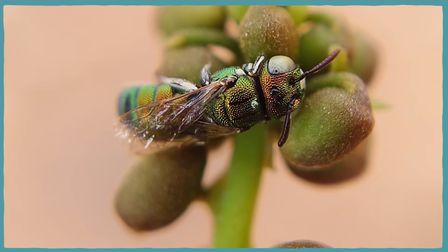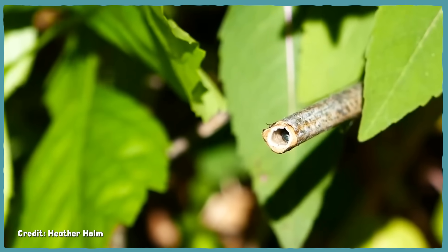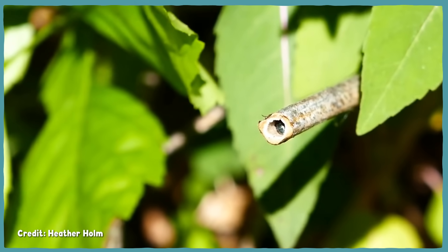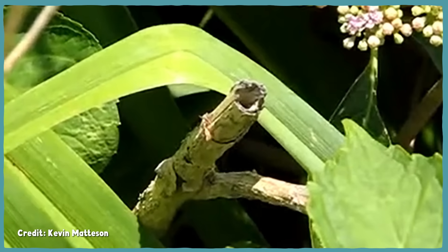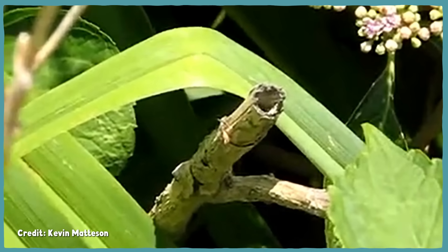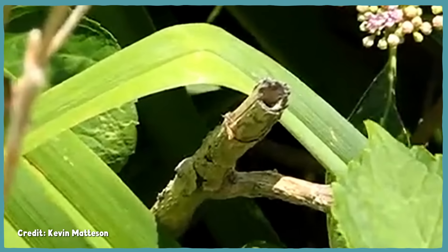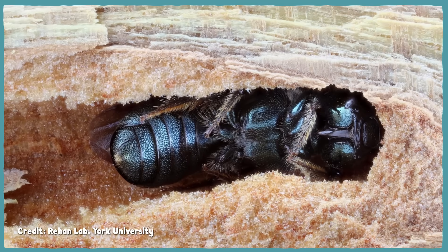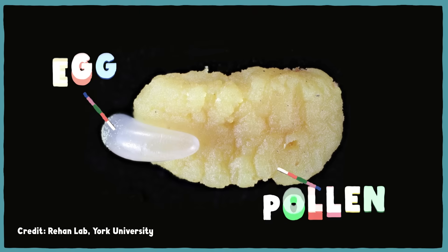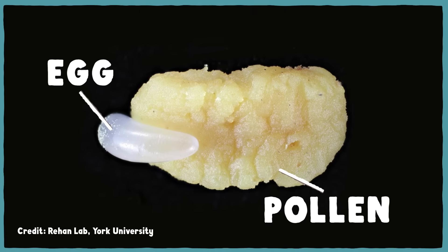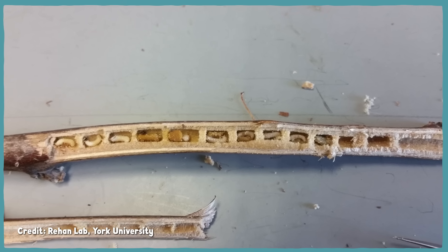Ceratina are generally bluish-green or black, and only about 8 millimeters long or smaller. Like the big boys that share their carpenter bee namesake, Ceratina builds their nests by burrowing into wood. But instead of dead tree branches or your front porch, small carpenter bees prefer broken plant stems with soft, pithy centers like raspberry or sumac. After mating, a Ceratina female burrows down into her chosen twig to make a cozy, tube-shaped nest. She then fills that nest with a series of pollen balls, all in a line, each with an egg laid on top of it and a wall of plant pith separating it from its neighbors.